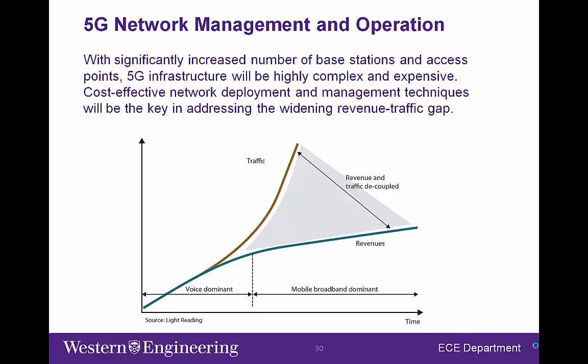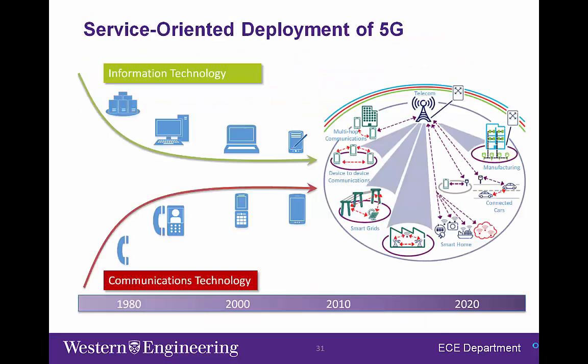With a significantly increased number of base stations and access points, 5G infrastructure will be highly complex and expensive. Cost-effective network deployment and management techniques will be the key in addressing the widening revenue-traffic gap. In supporting the ongoing ICT convergence, machine-to-machine communications, latency reduction techniques, and secure and reliable communications are also among the key enabling technologies for 5G.